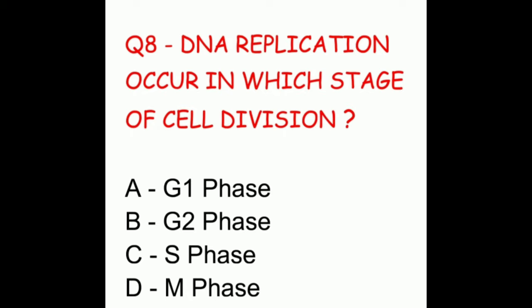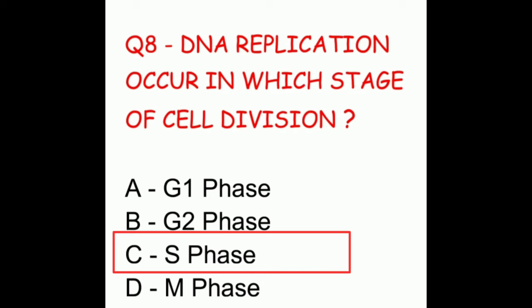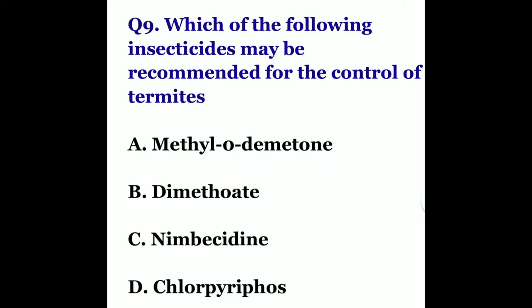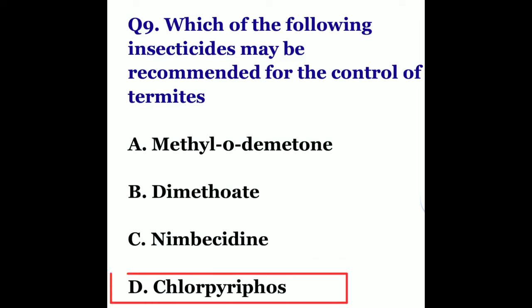Question eight: DNA replication occurs in which stage of cell division? The options are G1 phase, G2 phase, S phase, or M phase. The correct answer is S phase. Question nine: which insecticide may be recommended for the control of termites? The options are methylodemeton, dimethoate, nimbicidine, or chlorpyrifos. The correct answer is chlorpyrifos.